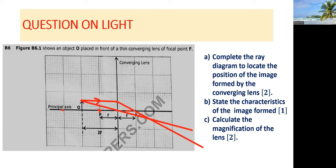The part at which the two rays converge is where the image is formed. So we draw a line there denoting the image.